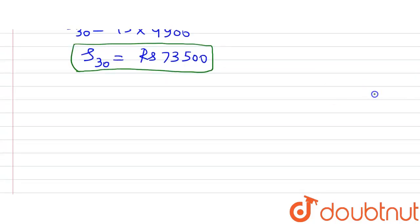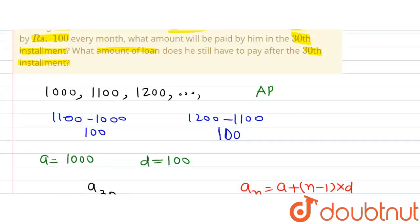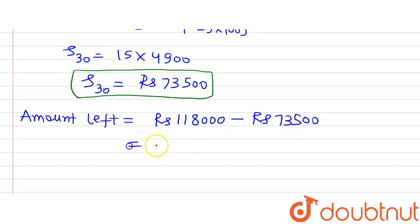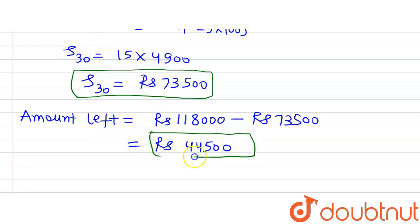The total loan was Rs. 1,18,000 and the amount paid after 30 installments is Rs. 73,500. So the amount of loan still left = Rs. 1,18,000 − Rs. 73,500 = Rs. 44,500. This is the amount remaining after paying 30 installments.